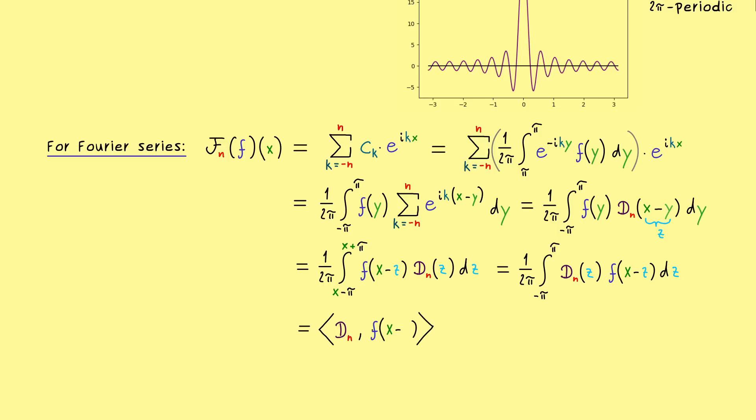So it's our L² inner product with D_n in the first component and the shifted function f in the second component. And this one we can write as f of (x minus dot) because only the variable x is fixed. This formulation is already very helpful, but on the other hand, we could also write it as a convolution if you know what that means. Indeed, the convolution is not complicated at all; it's just this integral all together. And then one would simply write D_n star f. And as the left hand side, the Fourier series has to be evaluated at the point x.